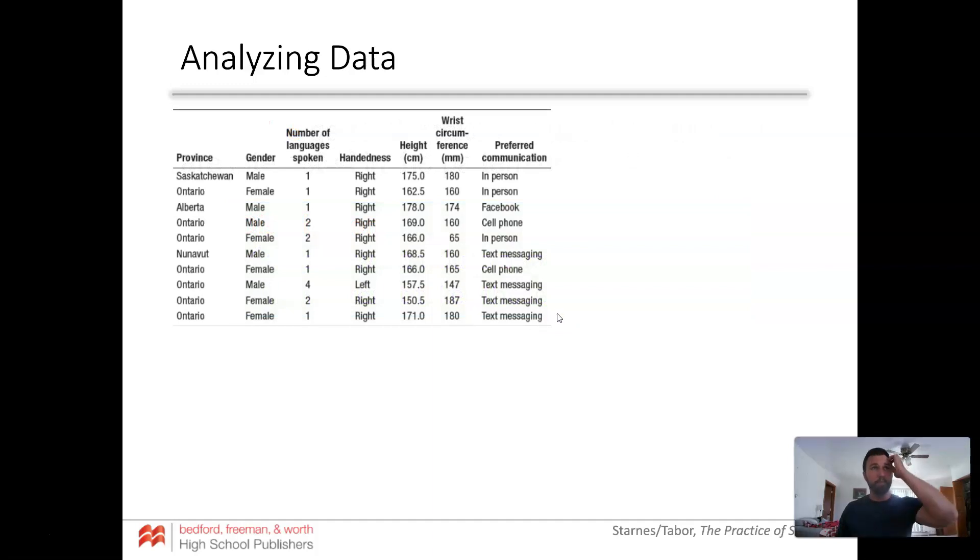So let's look at this. We have analyzed data: we have a male from Saskatchewan, speaks one language, is right-handed, is 175 centimeters tall, wrist circumference is 180 millimeters, and they like to talk in person with a mask on. Of course, so that's going to date this video really badly, but I just did it.